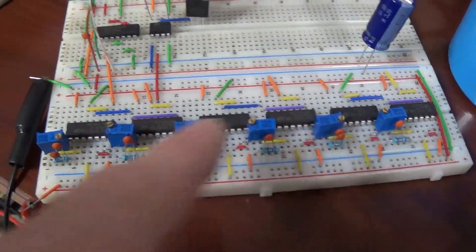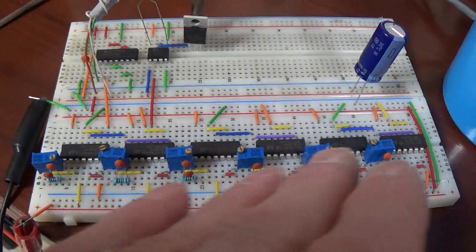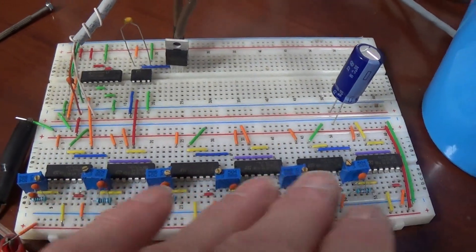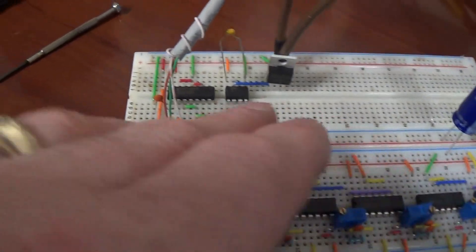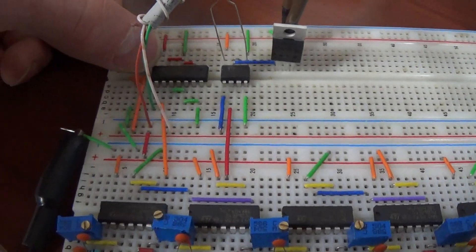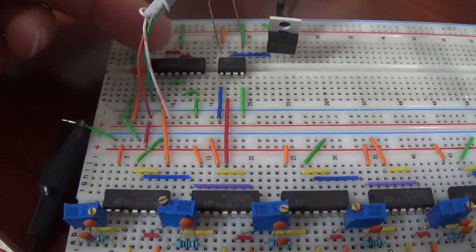And actually on my breadboard here I have it ready for a three phase motor. So there's one phase, second phase, third phase. And this is the chip for the control, the 4106 I believe, to control the opto.